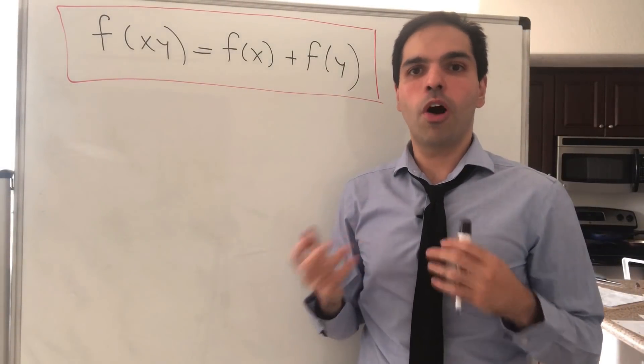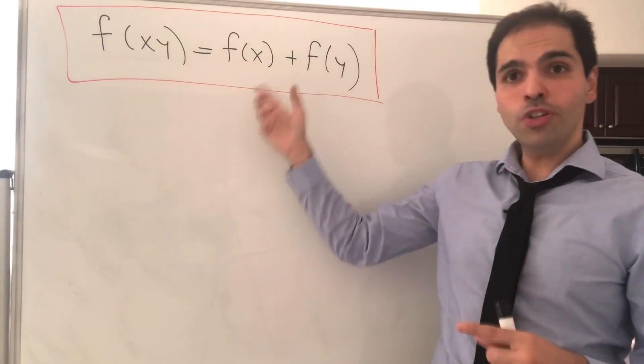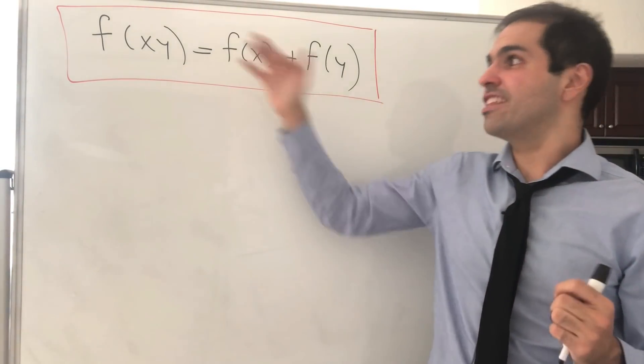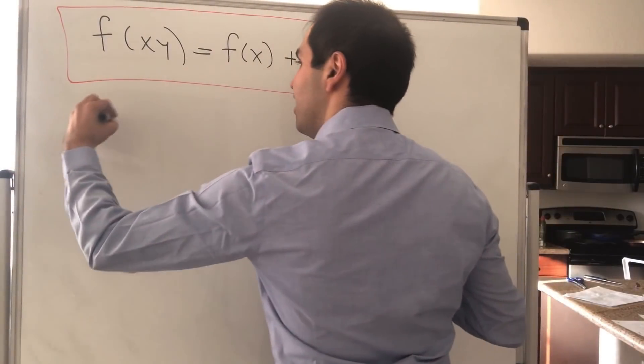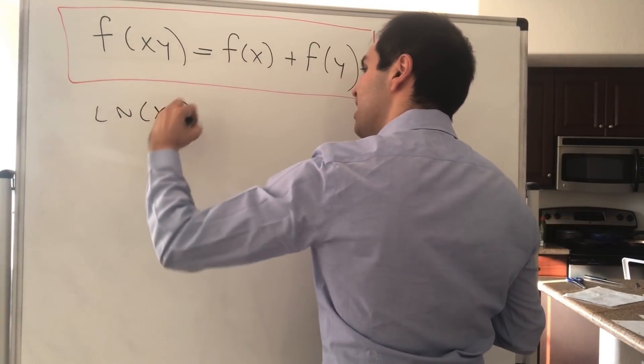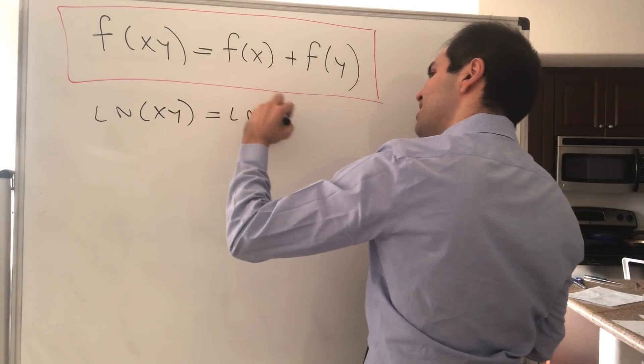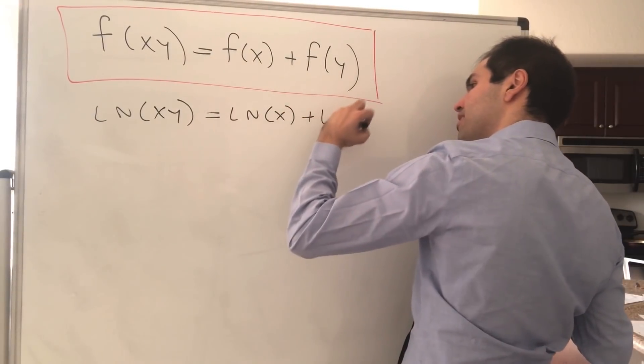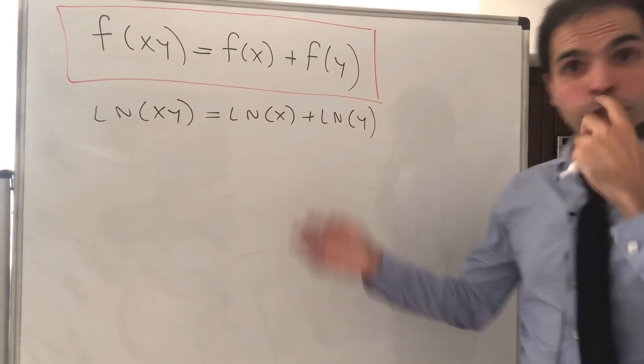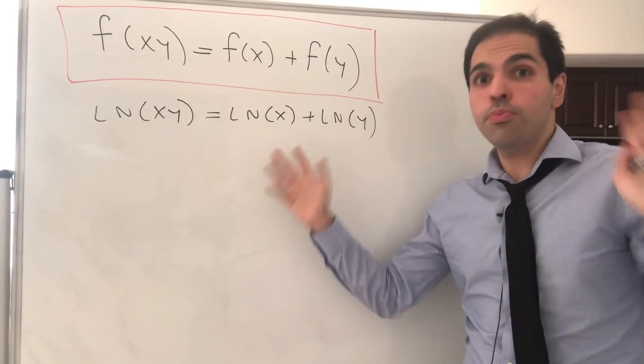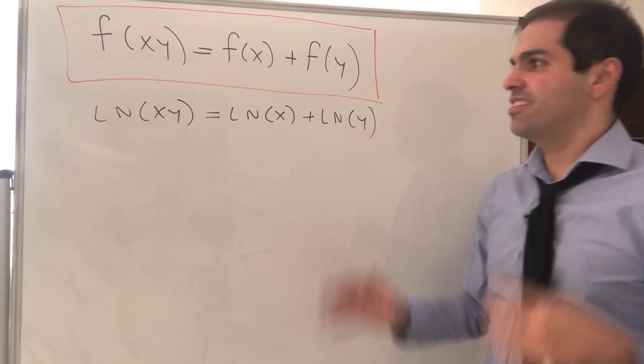If you think about this problem a little bit, there should be an obvious contender for this, namely the function ln, because ln of xy equals ln of x plus ln of y. And it turns out this is pretty much the only choice up to a constant.